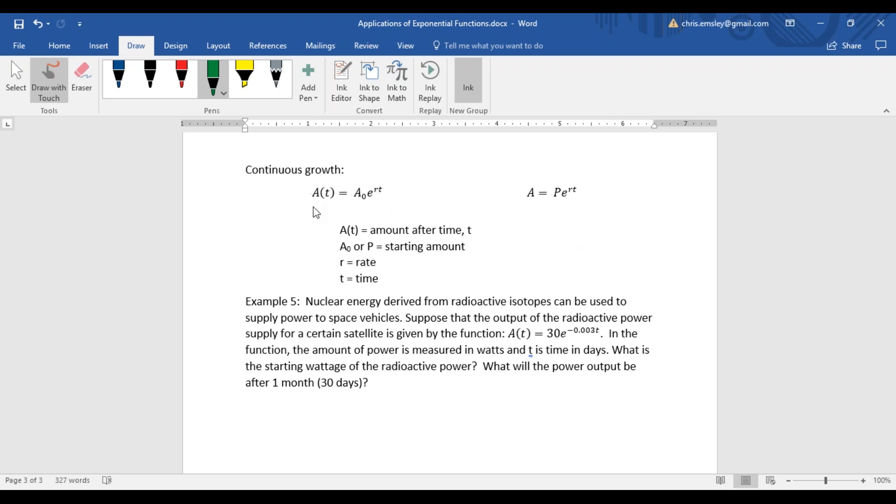I have two versions of the formula here. The one on the left is the general form. We also have a financial version of this formula. If you have interest that is compounded continuously, this is the formula we would use rather than the last one. A of t, or in this formula on the right A, that's the amount after time t.